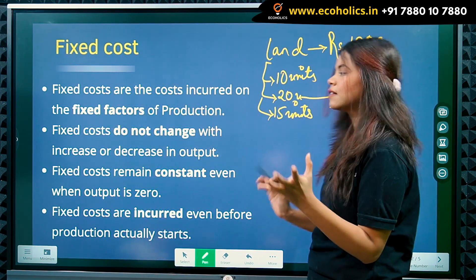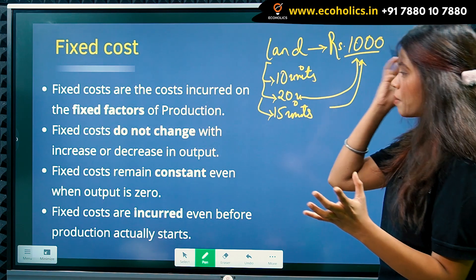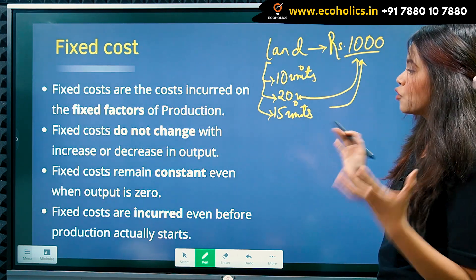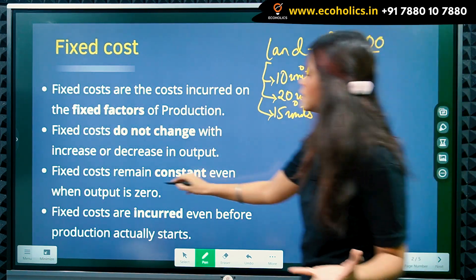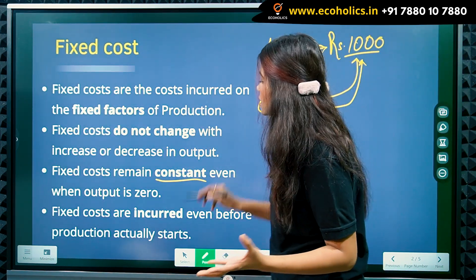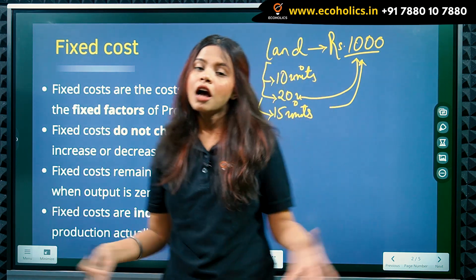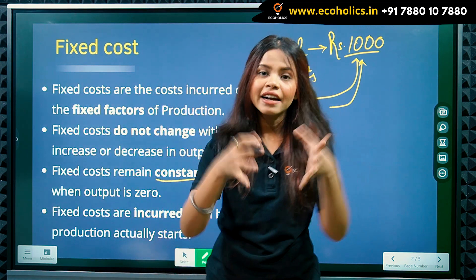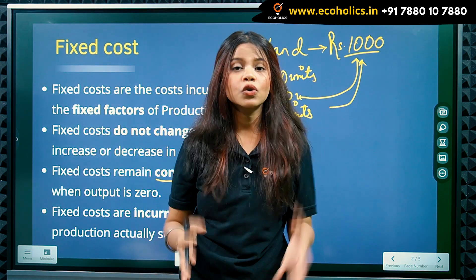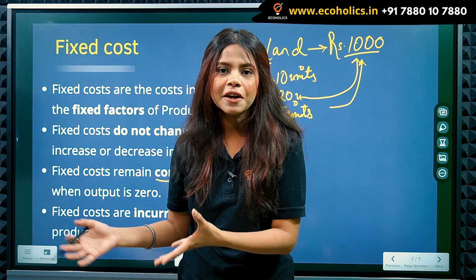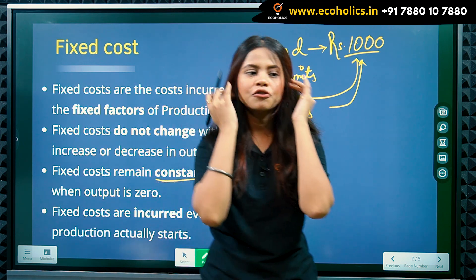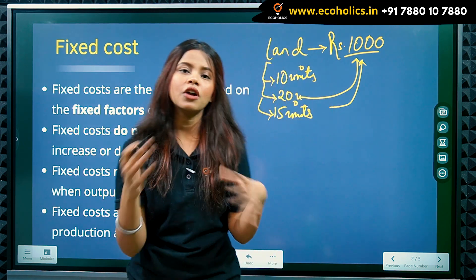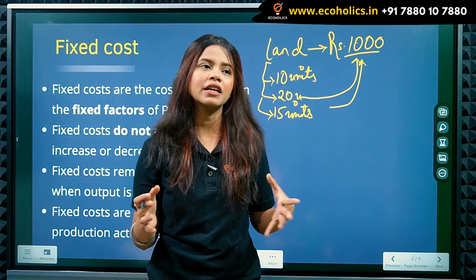The third point is that fixed costs remain constant even when the output is zero. Even if you have rented a piece of land, irrespective of whether production is happening or not, you still have to pay the rent.